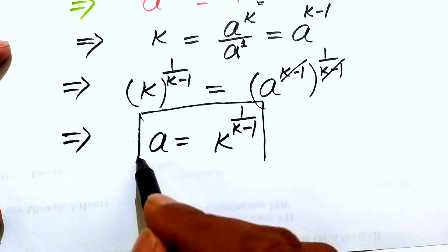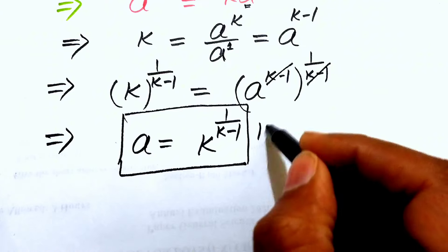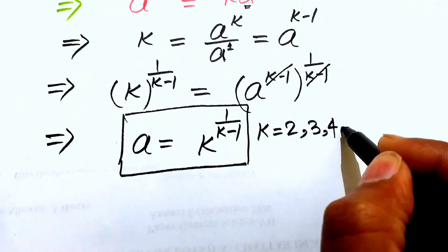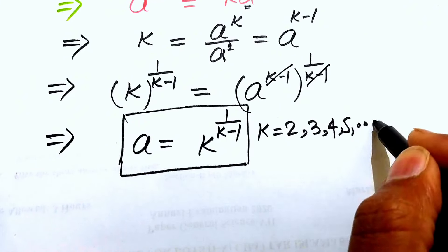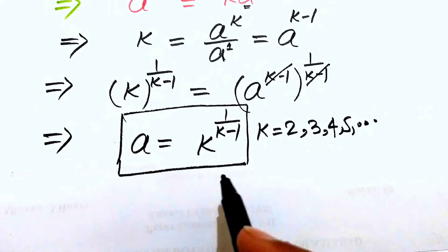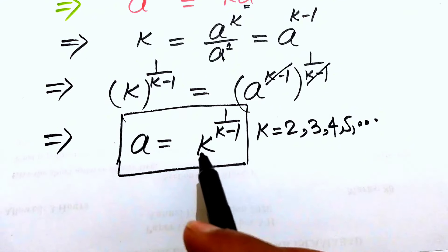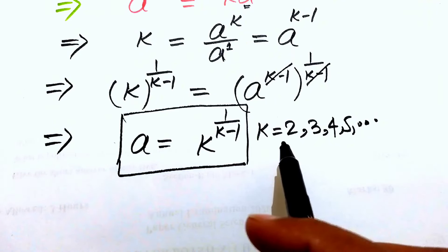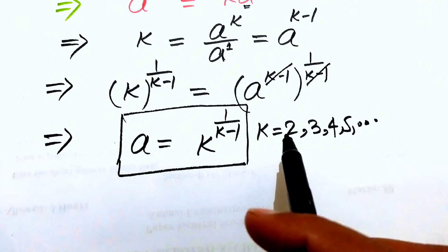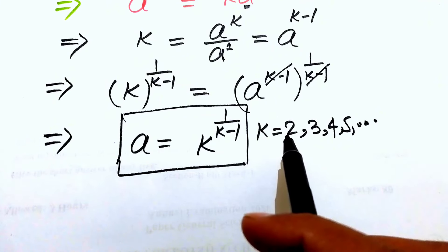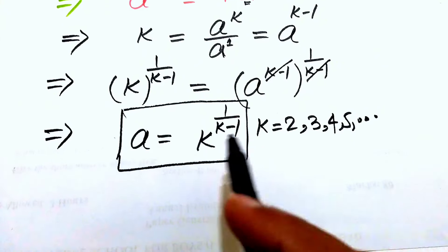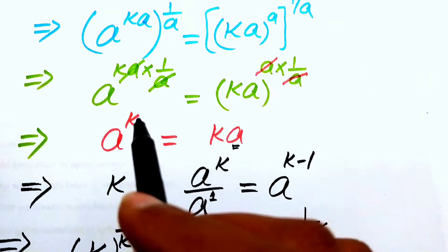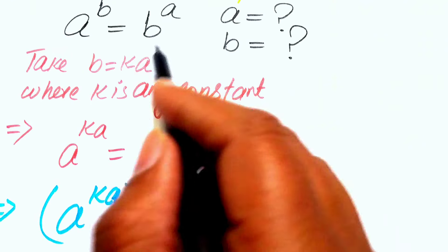So the value of a equals k to the power of one over (k minus one). Here k can be two, three, four, five, and so on — we cannot take k equals one because that would make the exponent infinity. So we take any value of k other than one.